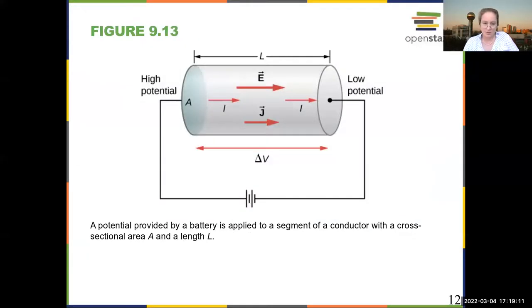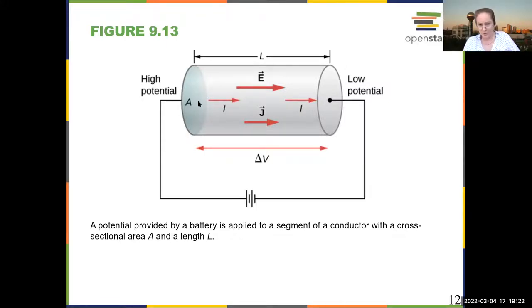Here you can see we have a battery hooked up and we're looking at a resistor. You have high potential on one side because this symbol means the voltage is higher on this side, so you have a higher potential here and a lower potential there.